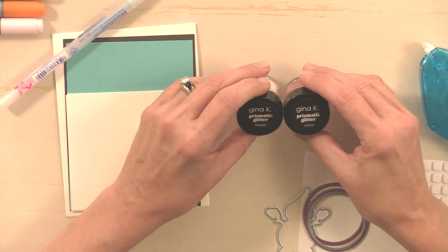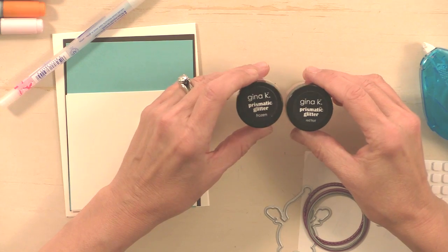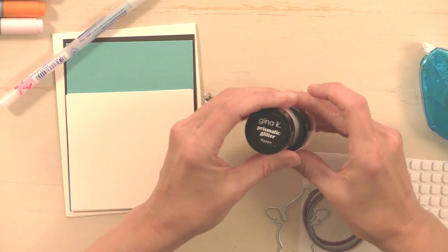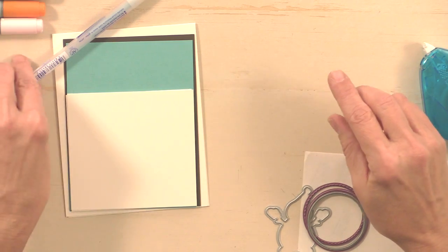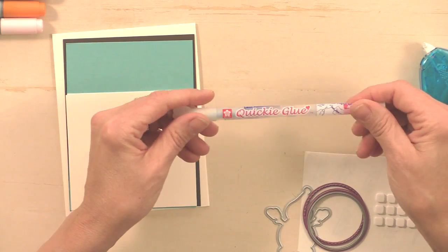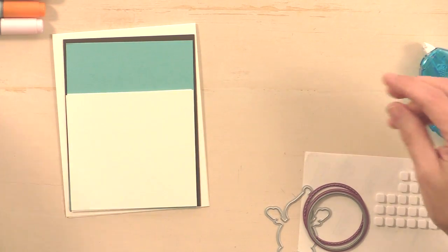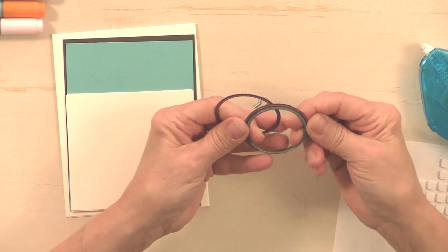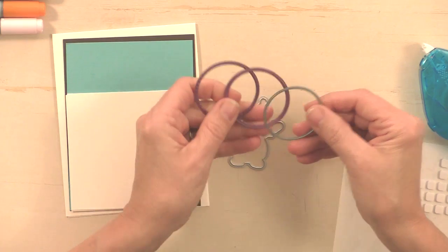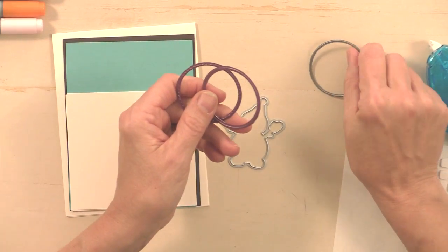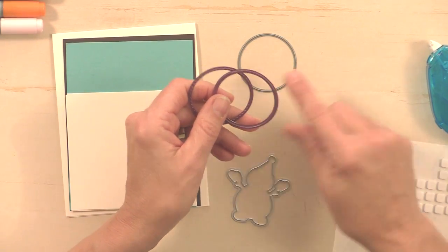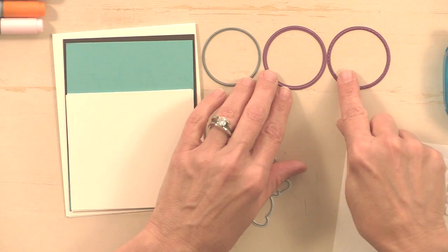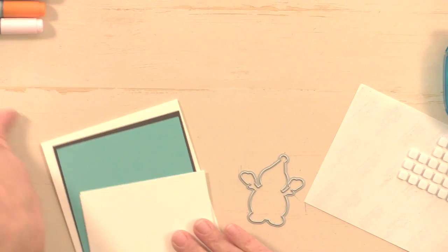For glitter, I'm going to use the Gina K Prismatic Glitter in Frozen and in Red Hot. Along with that, I'll be using a Quickie Glue pen to add that glitter. For dies, I have a couple different dies here. These are all Cheery Lynn dies: I have the Silver Stacker circles, the purple circles, and the inverted circles.